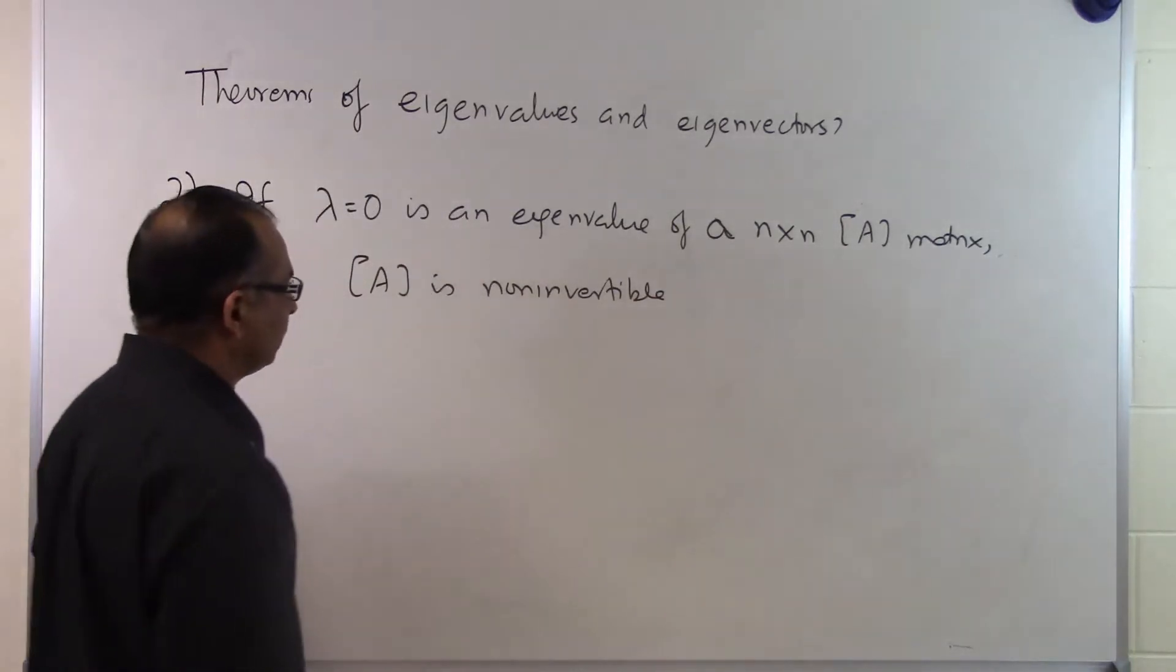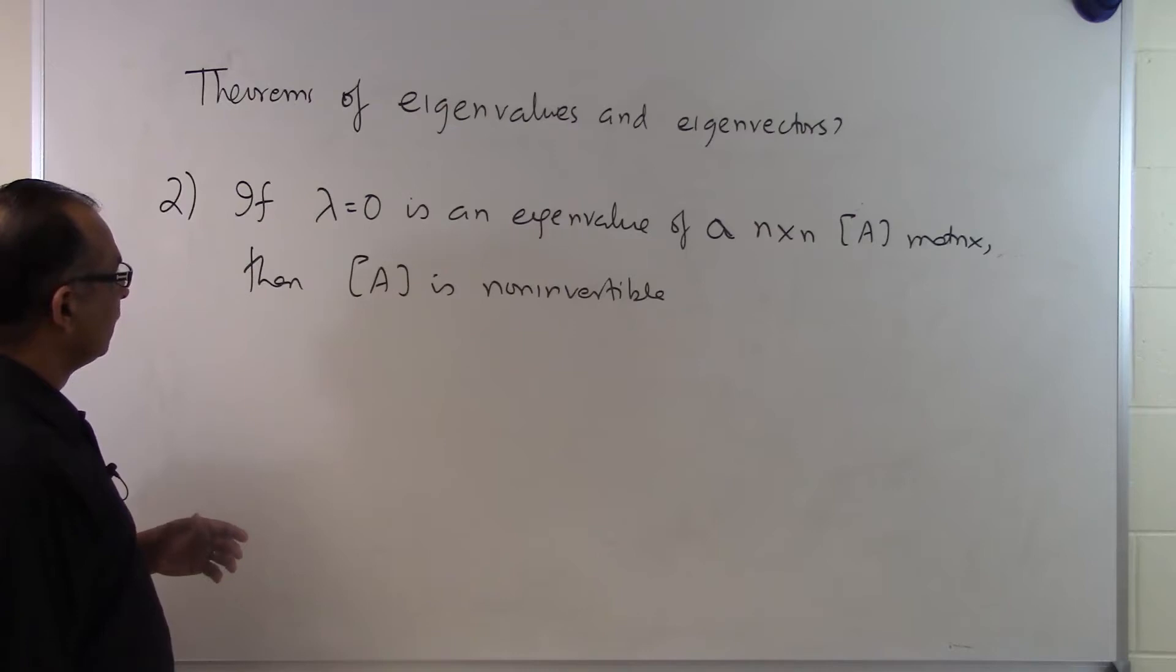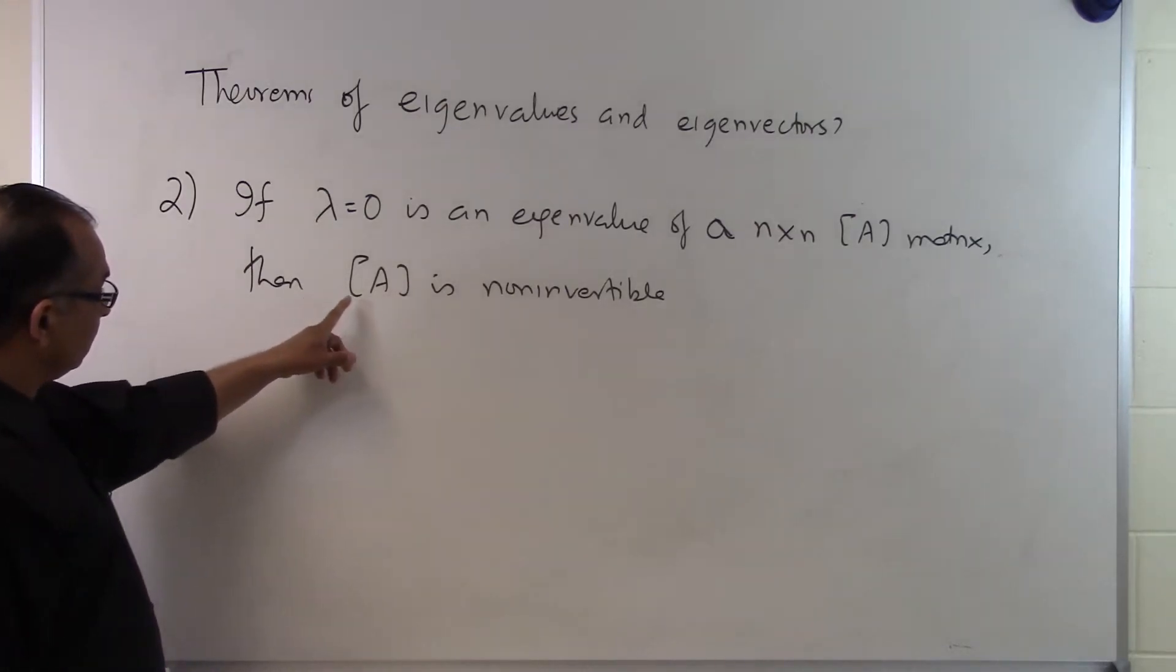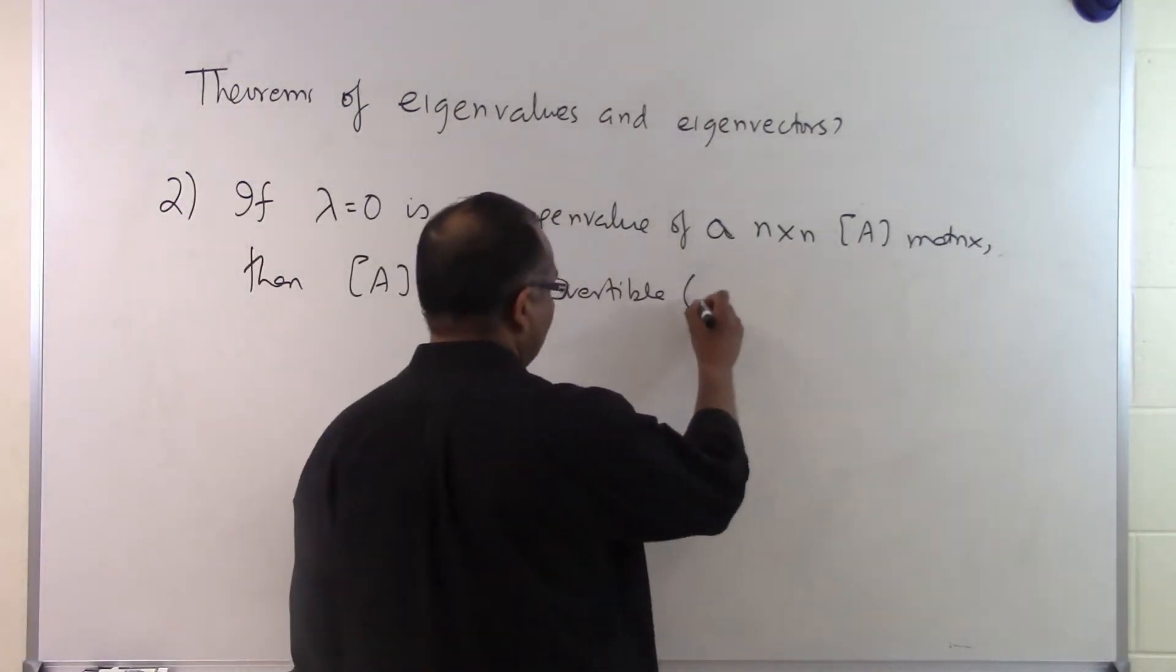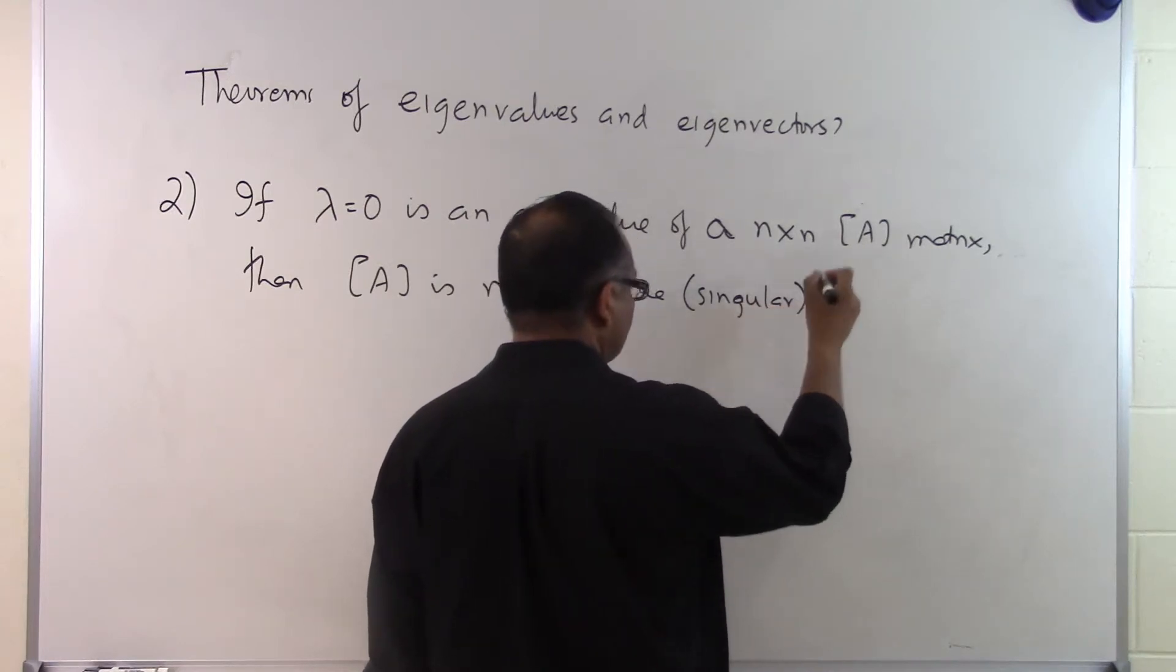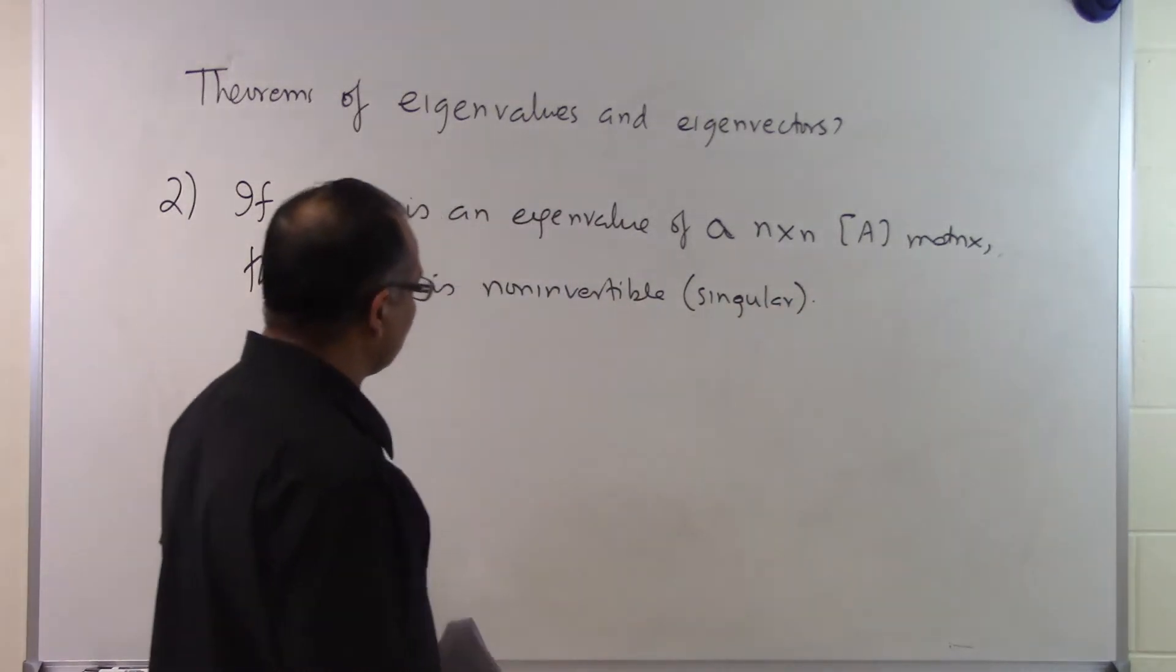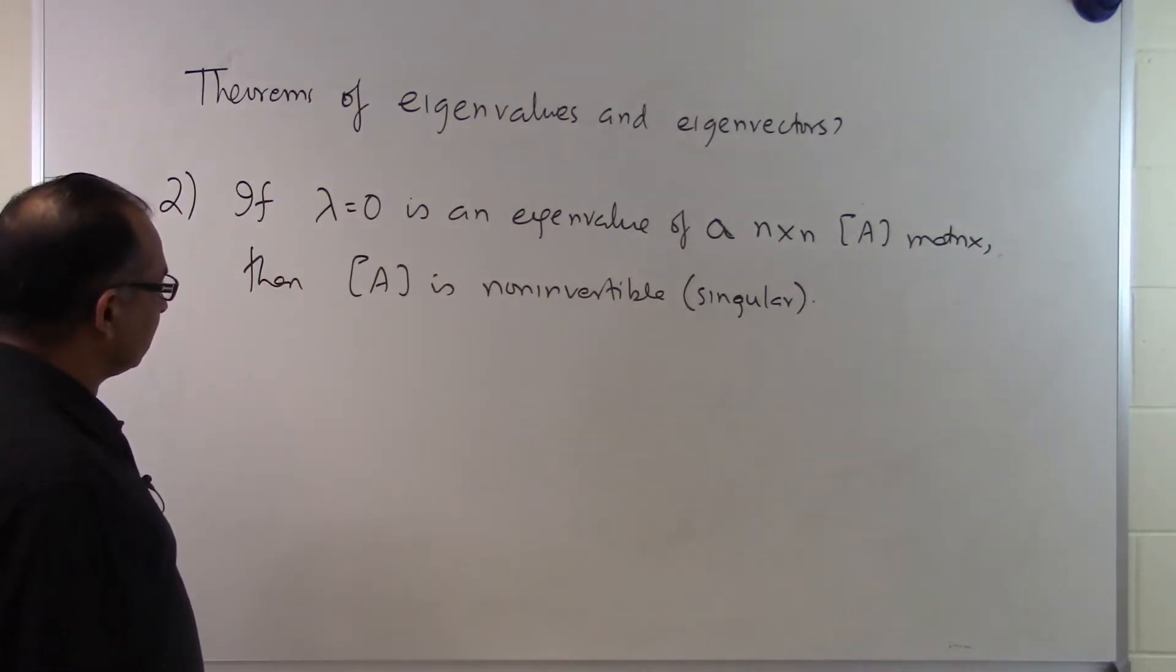So if you find out that one of the eigenvalues of the A matrix of a square matrix turns out to be 0, just 1, then the A matrix is non-invertible which is the same as saying it is singular, which is the same as saying that its inverse doesn't exist and so on and so forth. So that's what it is telling you.